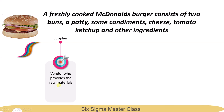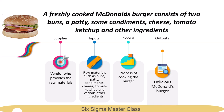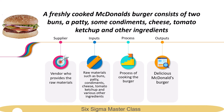The supplier is a vendor who provides the raw materials required to make the burger. There could be just one supplier for all the raw materials, or McDonald's may hire multiple suppliers for different raw materials. The inputs include raw materials such as buns, patty, condiments, cheese, tomato ketchup, and various other ingredients. The process is that the patty and buns are separately heated in an oven, then placed together, and other ingredients such as cheese and condiments are added based on the customer's order. The output is a delicious McDonald's burger, and the customer is the one who ordered it.